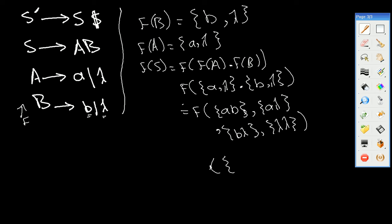So we have FIRST(A·B): A — since anything multiplied by lambda remains the same, we have A. Because we have A and A, we just keep one A. Then B, since we can't have two elements from the same time. And finally lambda. So FIRST(S) = {A, B, lambda}. This is the first step in calculating FIRST(S').